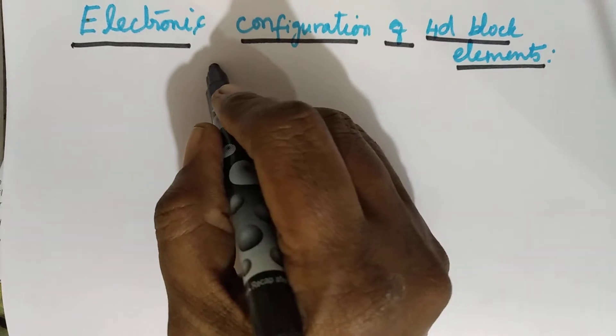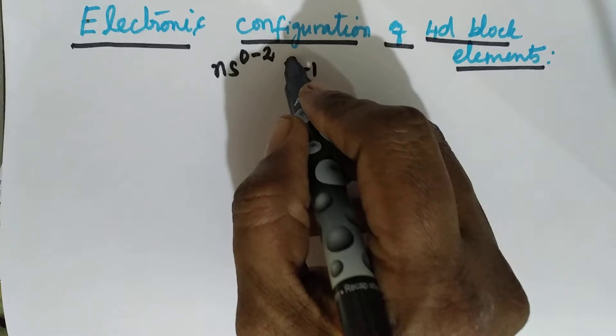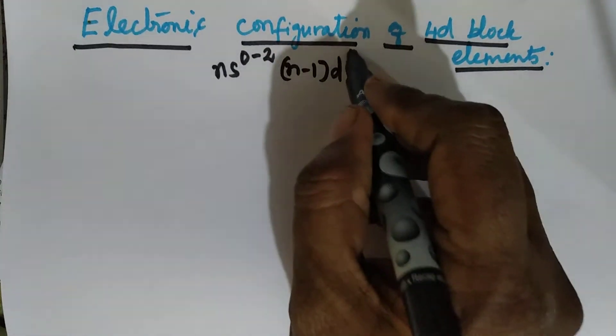First of all, we will write down the general formula. It goes with n is 0 to 2, n minus 1, d 1 to 10.